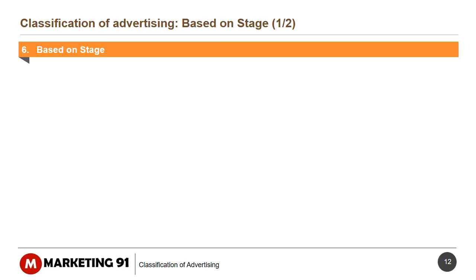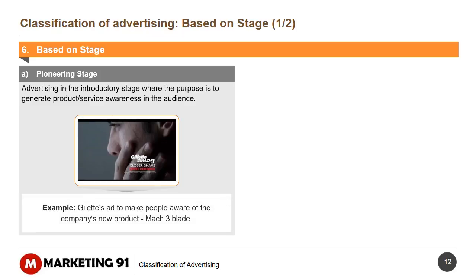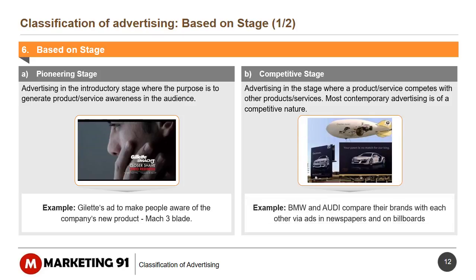The last classification is based on stage, which is divided into three sub-classifications. The pioneering stage involves advertising in the introductory stage where the purpose is to generate product or service awareness in the audience. For example, Gillette's ad to make people aware of the company's new product, Mark III Blade. The competitive stage involves advertising where a product or service competes with other products or services. Most contemporary advertising is of a competitive nature. For example, BMW and Audi compare their brands with each other via ads in newspapers and on billboards.